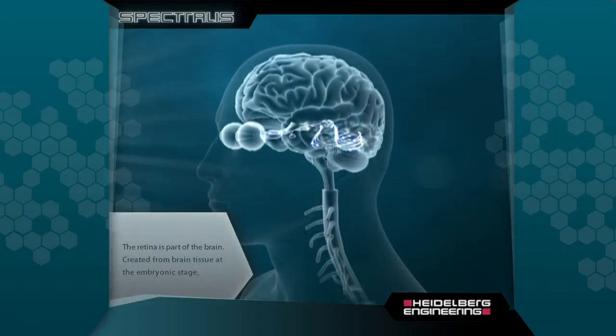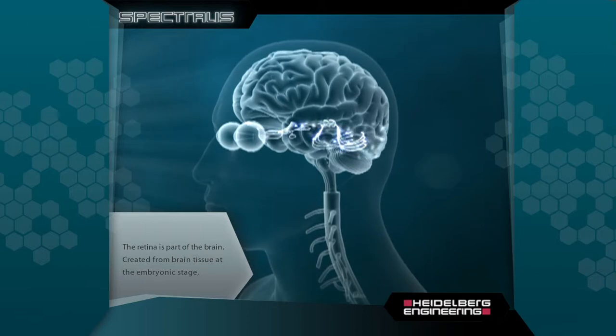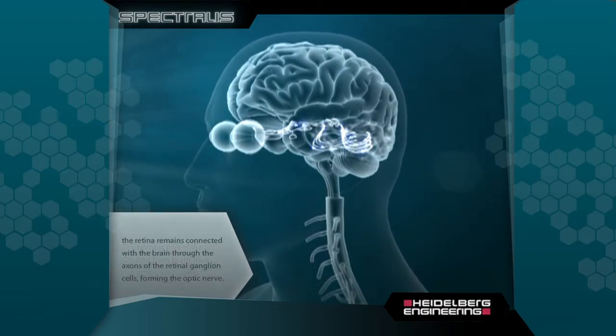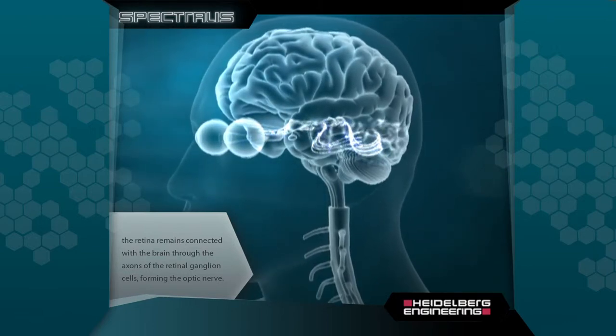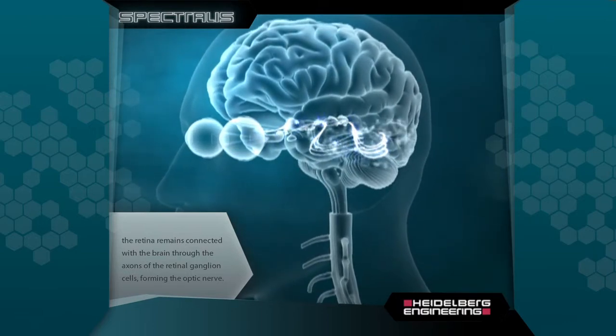The retina is part of the brain, created from brain tissue at the embryonic stage. The retina remains connected with the brain through the axons of the retinal ganglion cells forming the optic nerve.